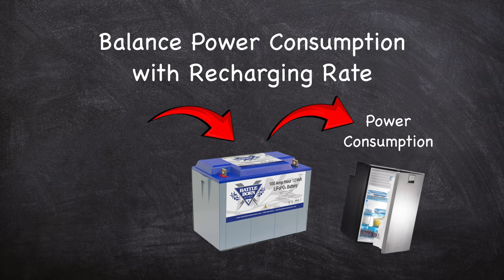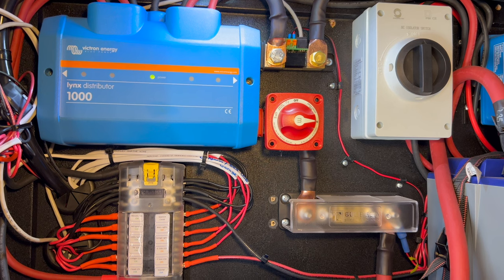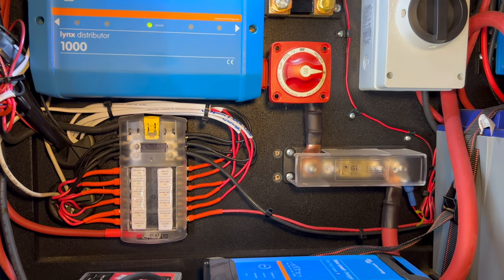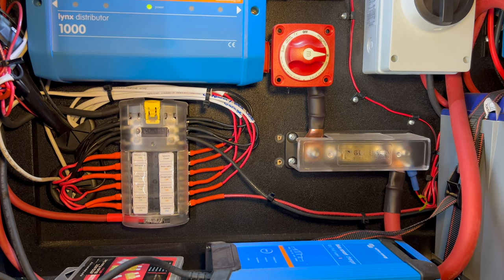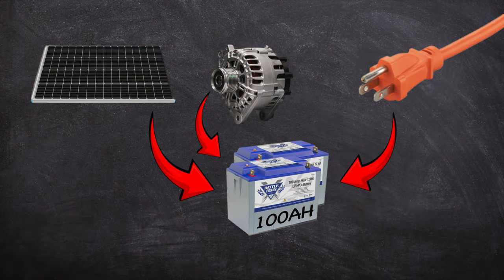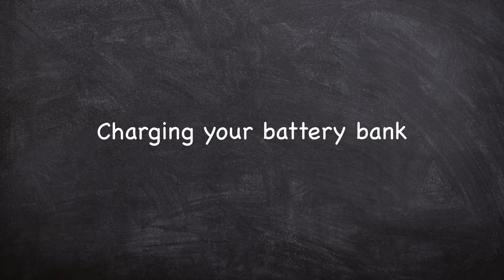Once you estimate the total amp hours you need per day, then you can size your battery bank accordingly. You simply want to have enough capacity to meet your daily needs and have a recharging system to keep up with those demands. When I was designing the power system for our van, I determined that I would need no more than 50 amp hours per day. I wanted to be able to go at least a couple of days without needing to recharge, and I didn't want to stress out about having a low battery. With that in mind, I chose to use two 100 amp hour batteries and three charging methods. I also decided to use lithium batteries for their longer lifespan, lighter weight, and their ability to be drained to near 100% of the rated amp hour capacity. Next, I will discuss the different methods of charging your battery bank.